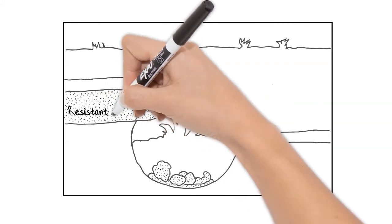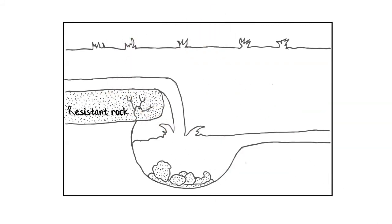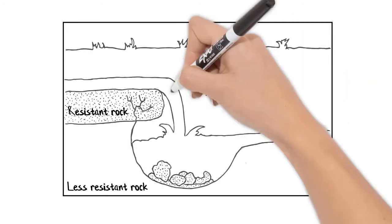Now let's add some labels. The resistant or harder rock overlying the softer or less resistant rock. We've got to label the waterfall itself.